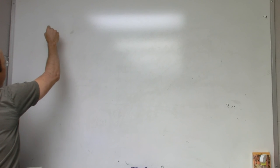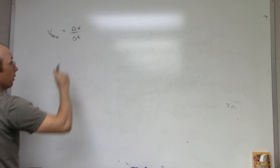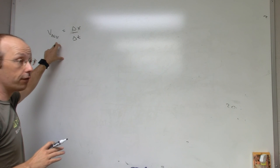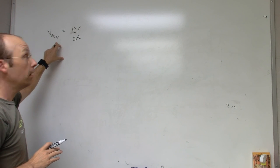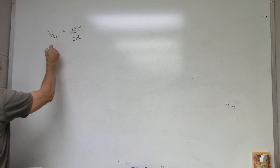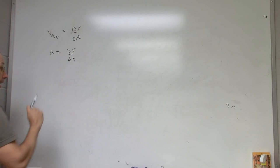So here I have average velocity, v average, is delta x over delta t. That's it, because it doesn't matter if it's changing velocity during that time. The average is still delta x over delta t. And then I have the acceleration is delta v over delta t. Now technically, this is the average acceleration,